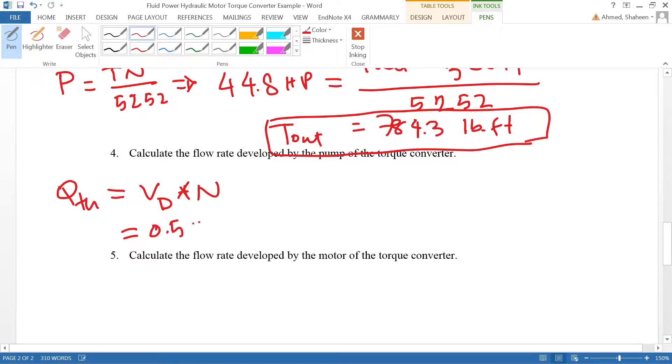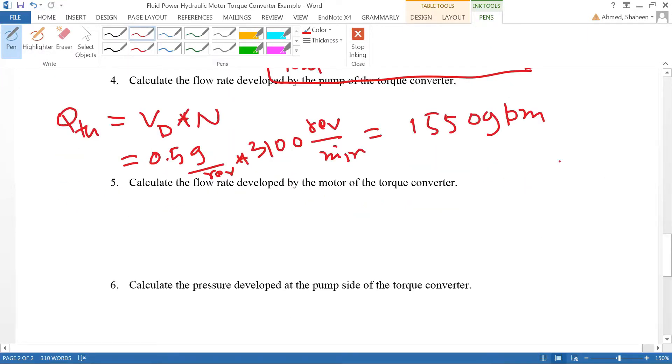2 quart is half gallon per revolution. The volumetric displacement is given typically in one revolution how much fluid is displaced, and the pump side of the torque converter is rotating at 3100 RPM. Then I got 1550 gallon per minute output, the theoretical flow developed by the pump.